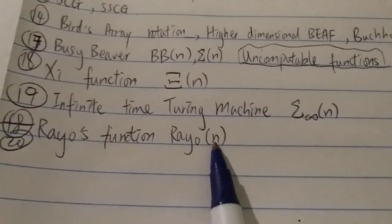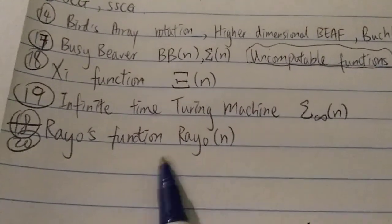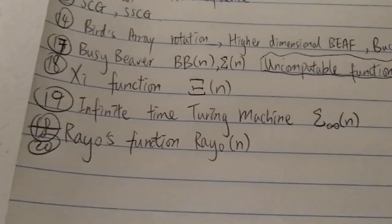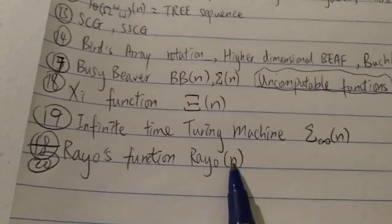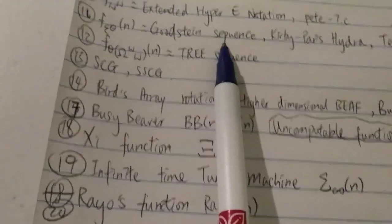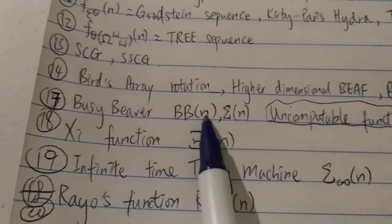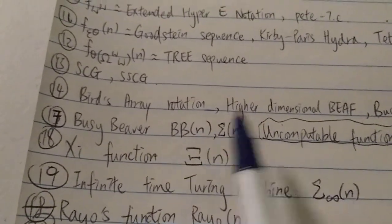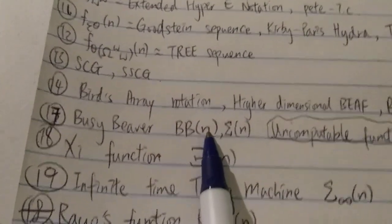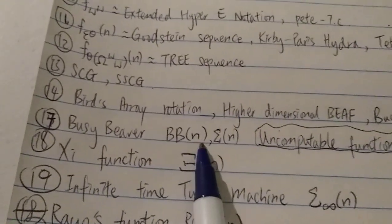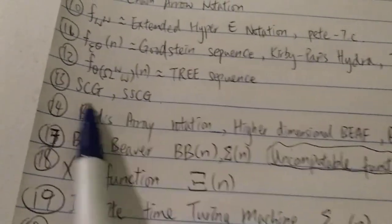But as it grows bigger and bigger, as n grows bigger and bigger, it immediately grows extremely, extremely fast. And eventually, it grows faster than any of the previous functions over here. Same thing for busy beaver. Busy beaver 1, 2, 3, 4 is very slow. I think busy beaver 3 is way smaller than 3↑↑↑↑3. But as n grows bigger, it surpasses anything.